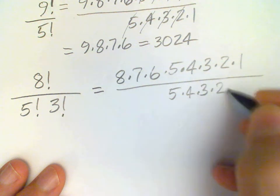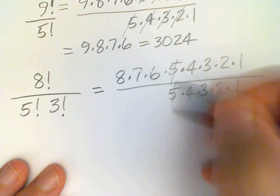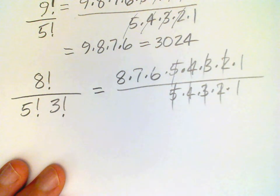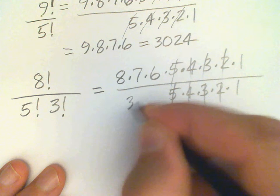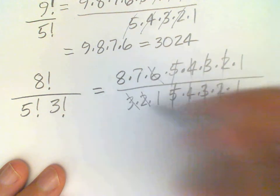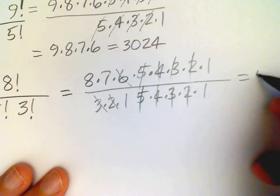So all those factors are going to go away. And then 3 factorial is just 3 times 2 times 1, which is 6, so that will cancel that 6. And so the answer is just 8 times 7, which is 56.